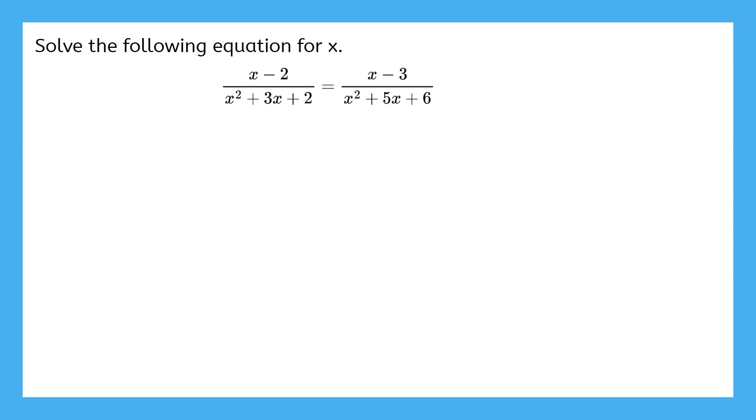Here's a second example. The LCM method is the best option for this problem because there is a common factor in the denominators. We see in the factored form that they have x plus 2 in common. So let's find the LCM of the denominators. If a factor is in one of these, it has to be in the LCM. Our first denominator has x plus 2 and x plus 1, so they have to be included. And the second denominator also has an x plus 3, so let's include that. This is our LCM.